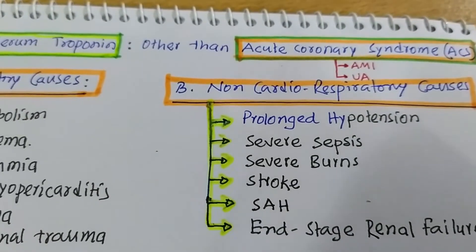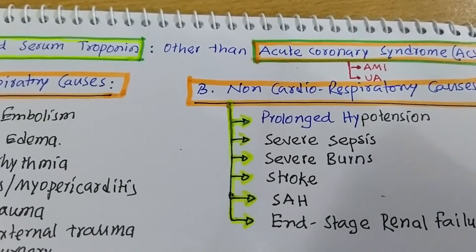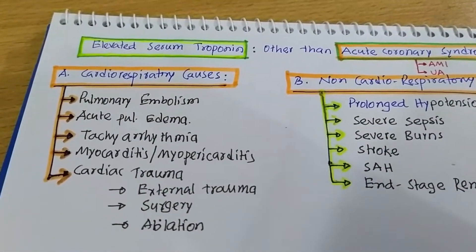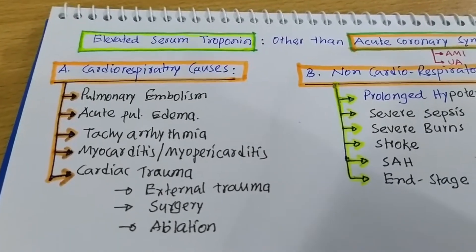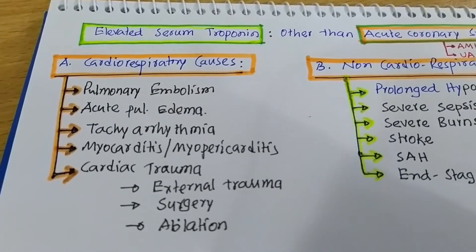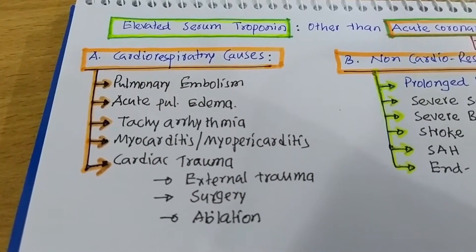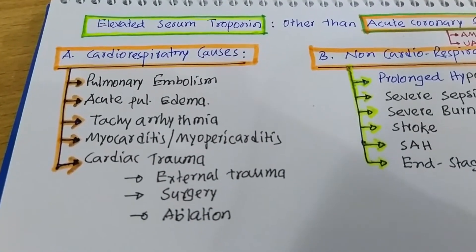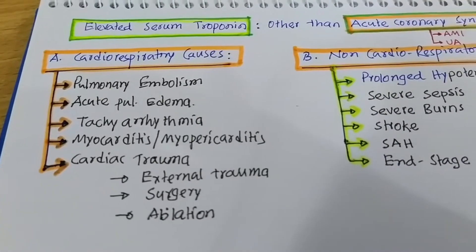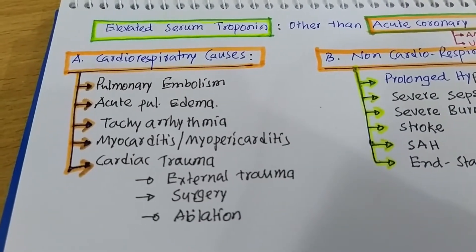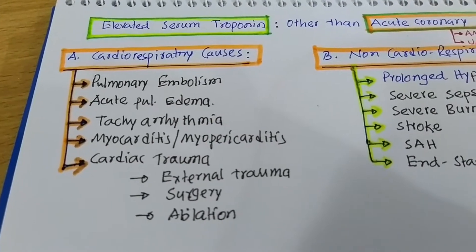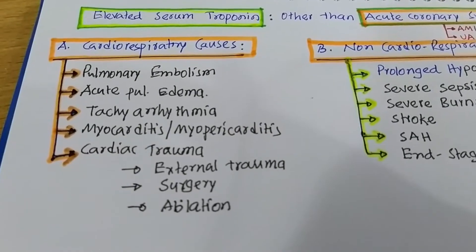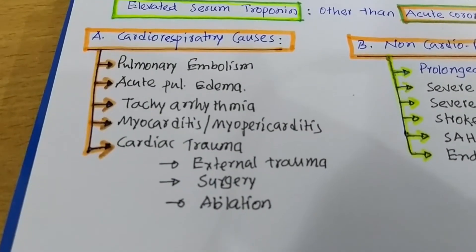This is the most important cause we know, but we should also know the other causes of elevated serum troponin. There are two types of causes of elevated serum troponin other than acute coronary syndrome: number one, cardiorespiratory causes, and number two, non-cardiorespiratory causes, as you are seeing here.